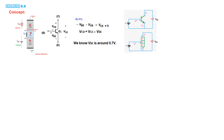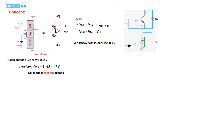We know that VBE is around 0.7 volt. Let's assume VCE is 2 volts. Then VCB equals VCE minus VBE equals 2 minus 0.7 equals 1.7 volts positive across the collector-base junction. Therefore the CB diode is reverse biased, because positive is at the N terminal and negative at the P terminal. The BJT is in active mode because the BE junction is forward biased and the CB junction is reverse biased.